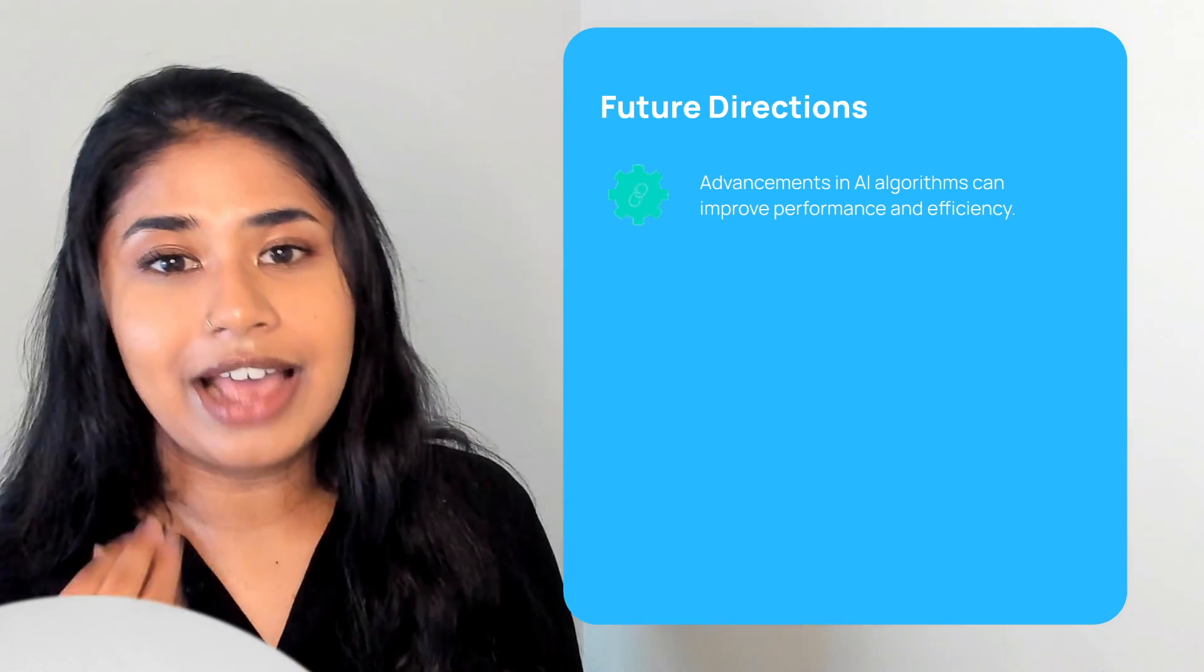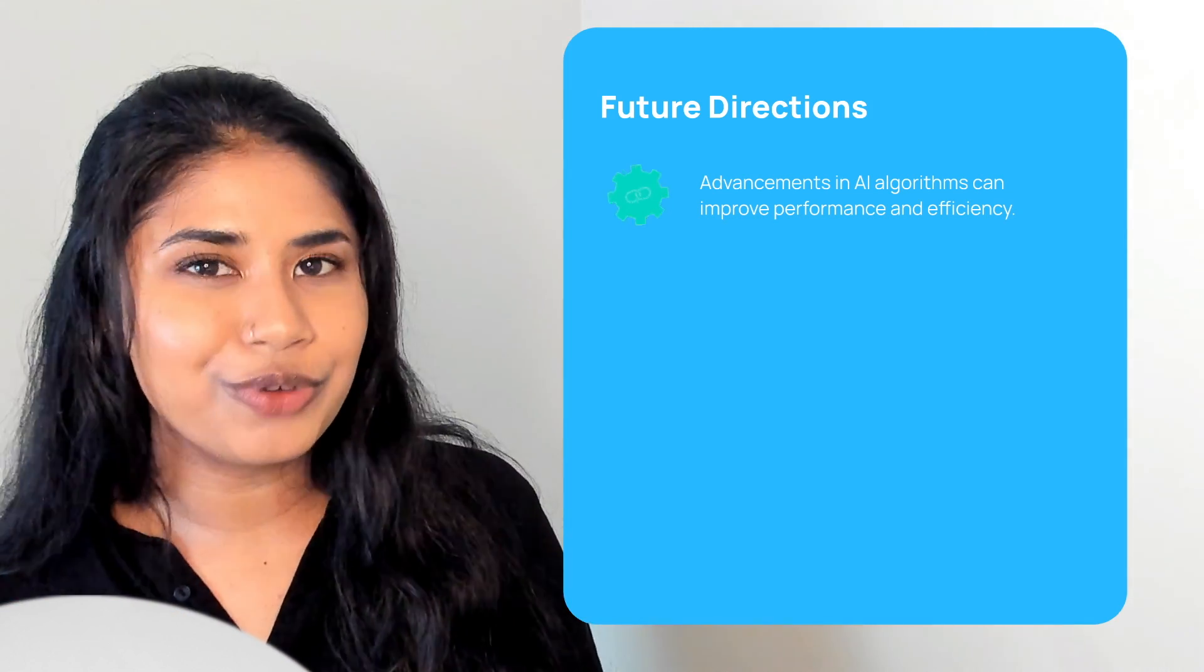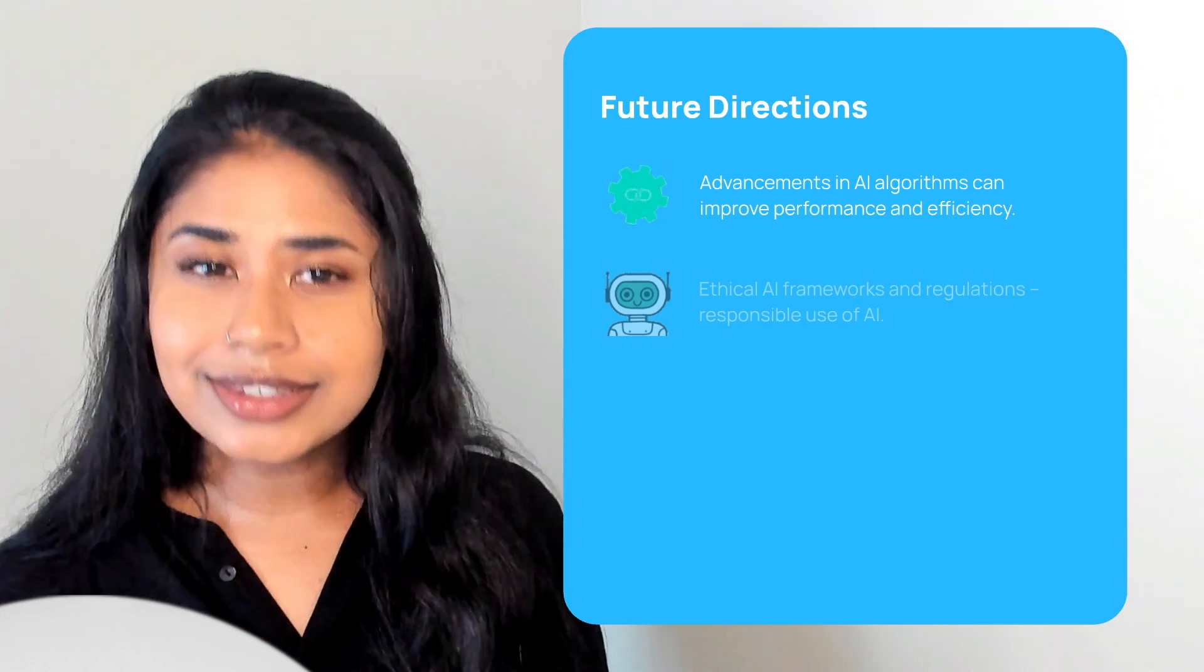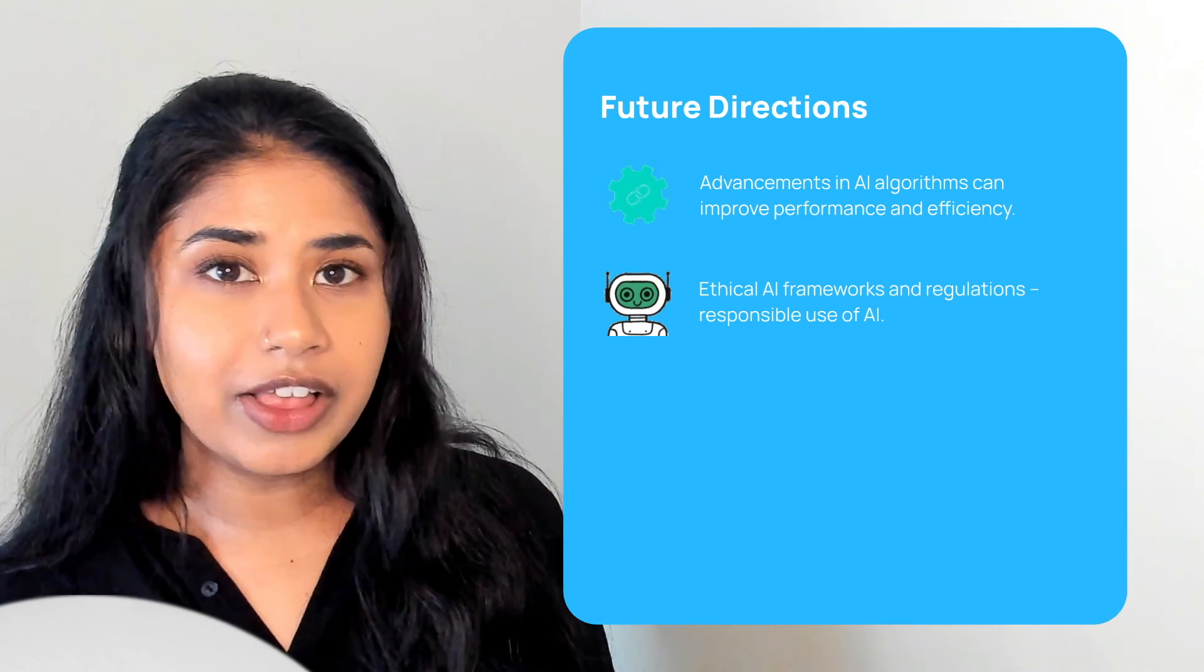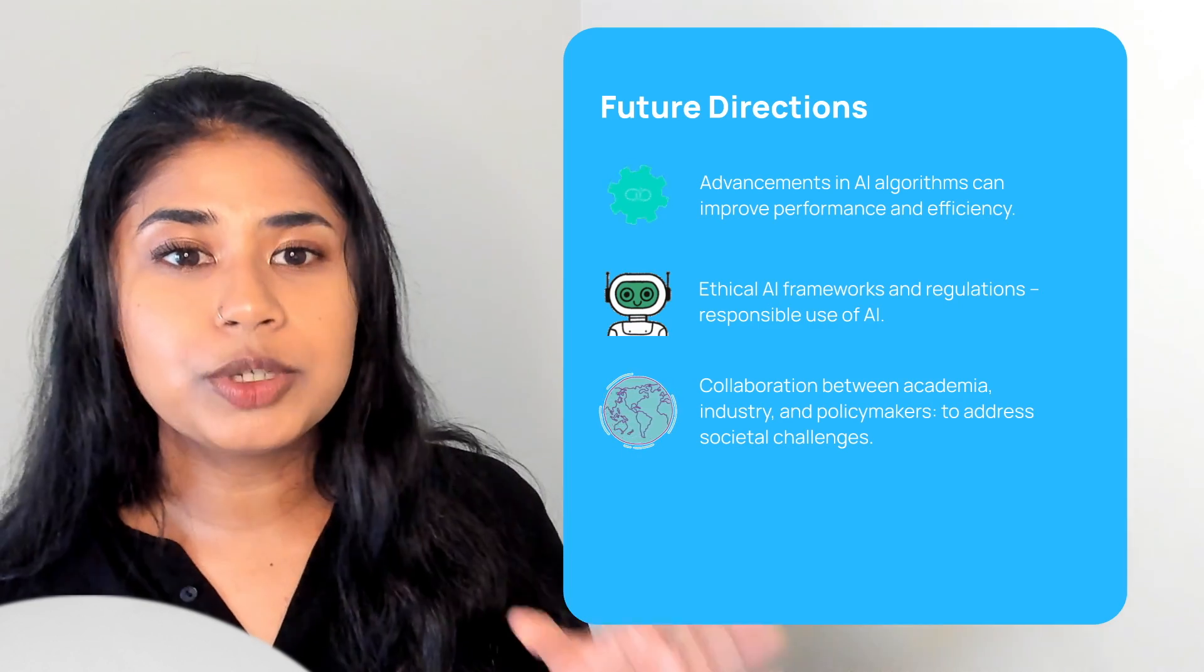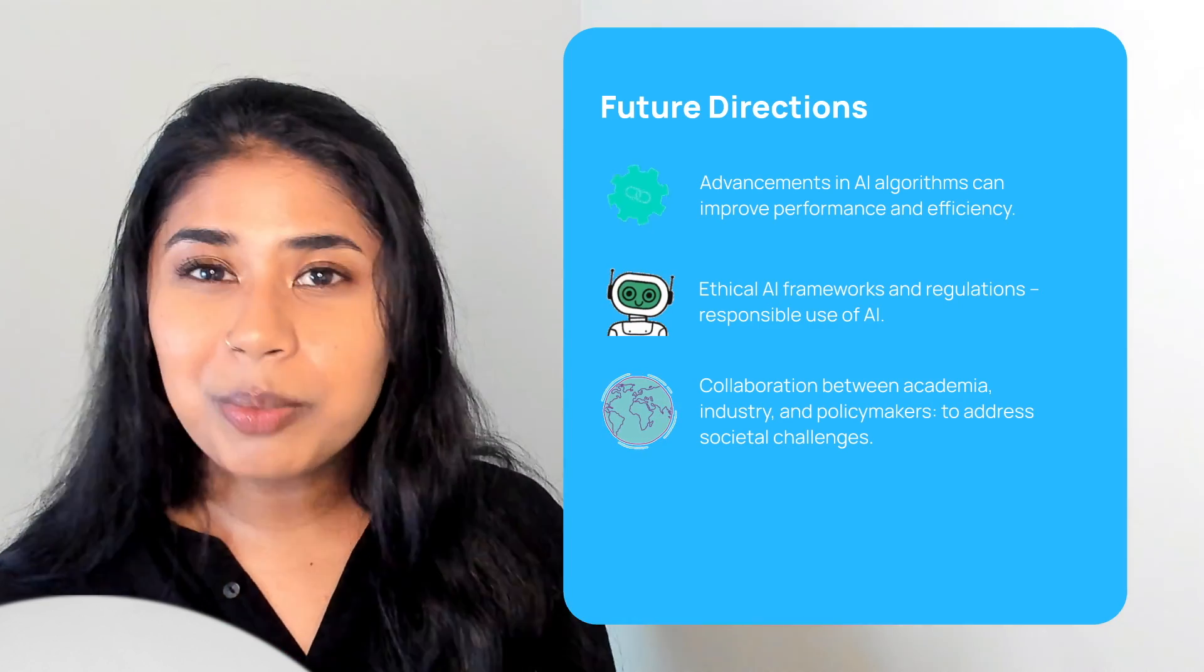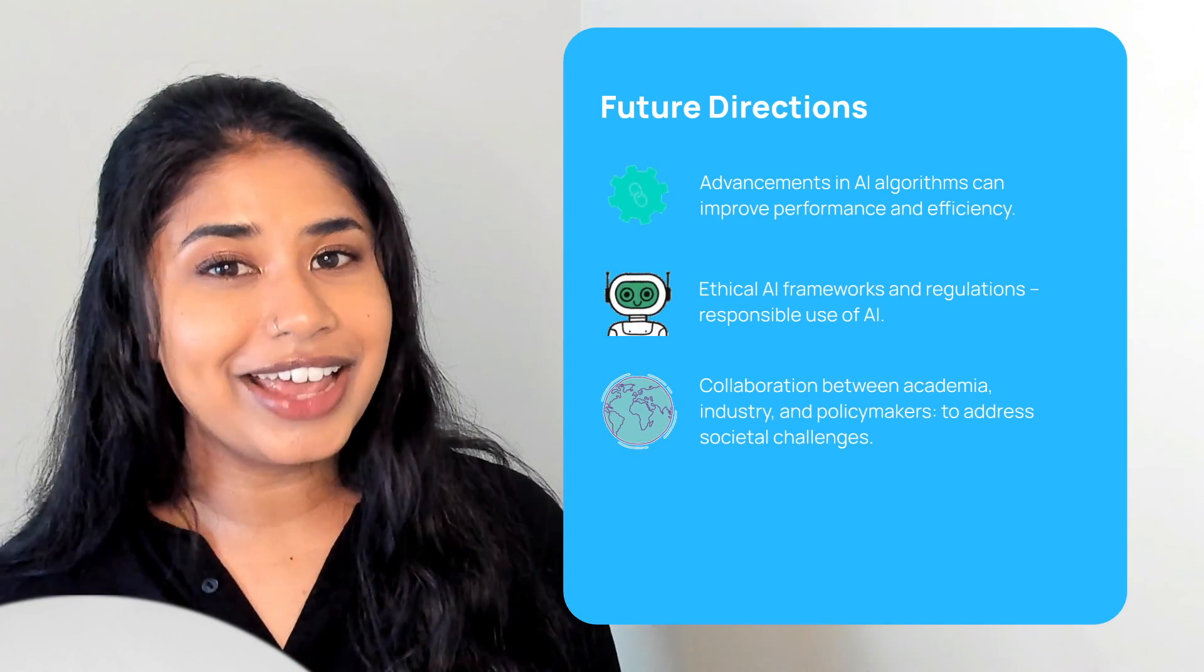First, advancements in AI algorithms, such as deep learning and reinforcement learning, which can improve performance and efficiency. Second, ethical AI frameworks and regulations could ensure responsible development and use of AI technologies. And lastly, collaboration between academia, industry, and policy makers to address societal challenges and maximize the benefits of AI for all.